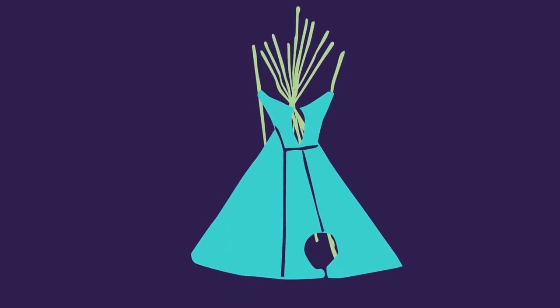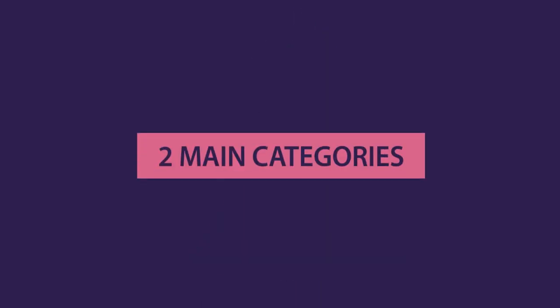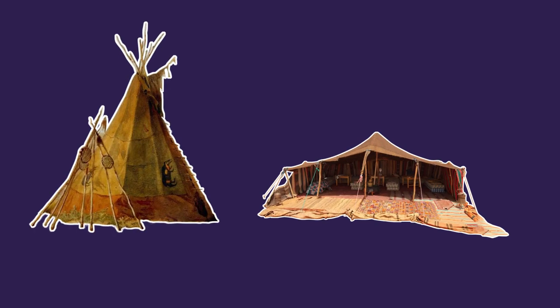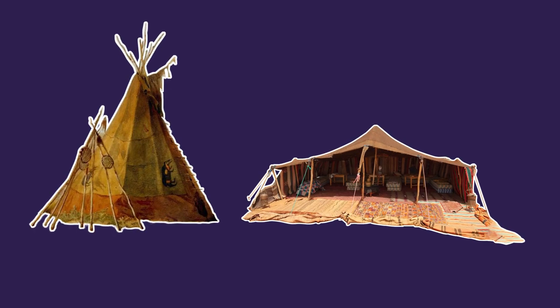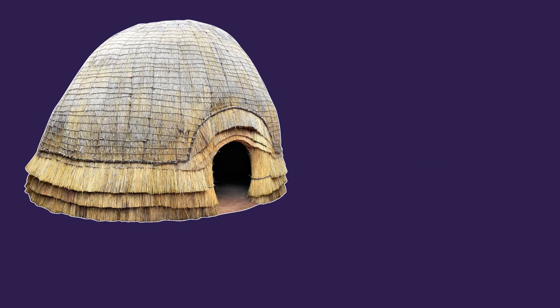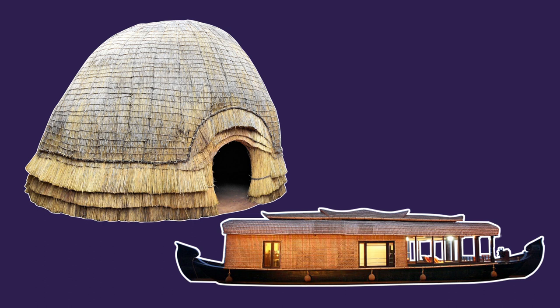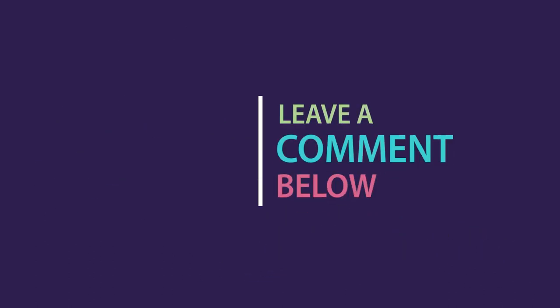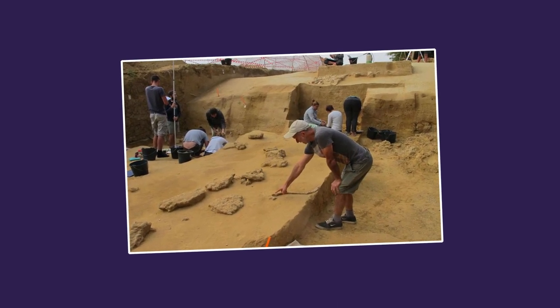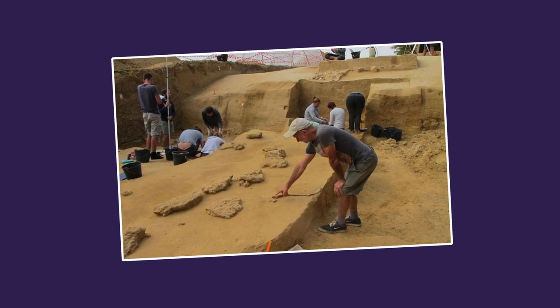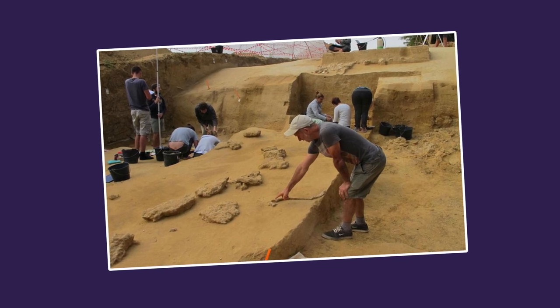Temporary architecture can be divided into two main categories. One, the mountable structures, such as the Native American tents or the Bedouin desert tents. And two, movable structures, like the lightweight hut of Africa and the boathouse of the Far East. If you would like us to go more into the prehistorical shelters and how they were perfected, please let us know in the comment section below. Because of this temporal property, most of the details of the prehistorical dwellings were lost with time.